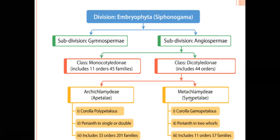Metachlamidae is also called Sympetale. Sympetale means corolla petals are fused — Gamopetale. The perianth is compulsorily arranged in two whorls: outer whorl called calyx and inner whorl called corolla. The inner corolla is compulsorily fused, called Gamopetale or Sympetale. Metachlamidae is classified into 11 orders and 57 families. This is the overall flowchart of Engler and Prandtl classification.